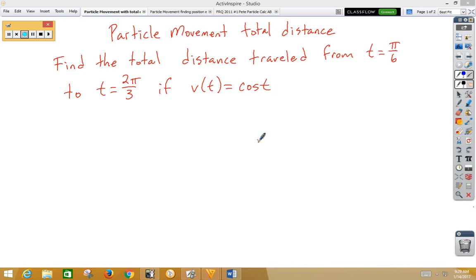Well, the first thing we need to find out is, did the particle stop in that time frame? So to do that, we're going to set velocity equal to 0, and we're going to think from π/6 to 2π/3, is cosine ever 0? And the answer is yes, that would be at π/2.